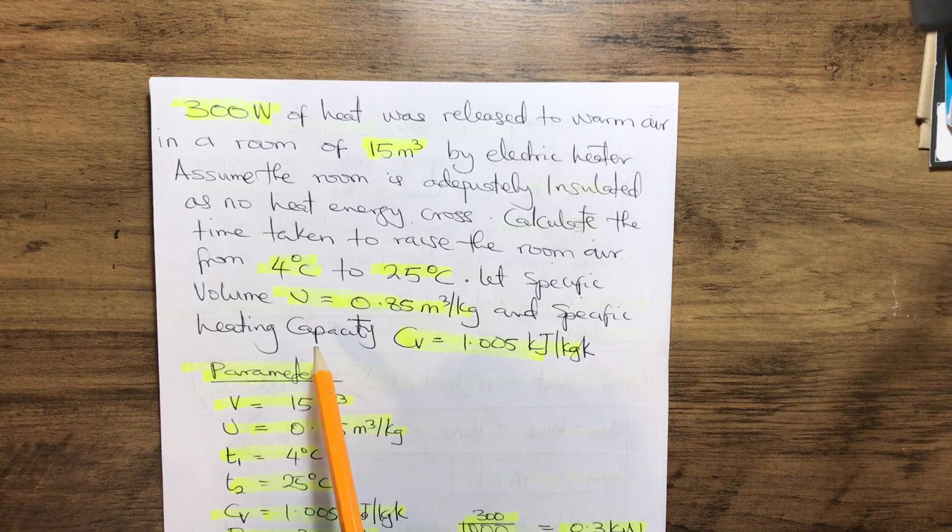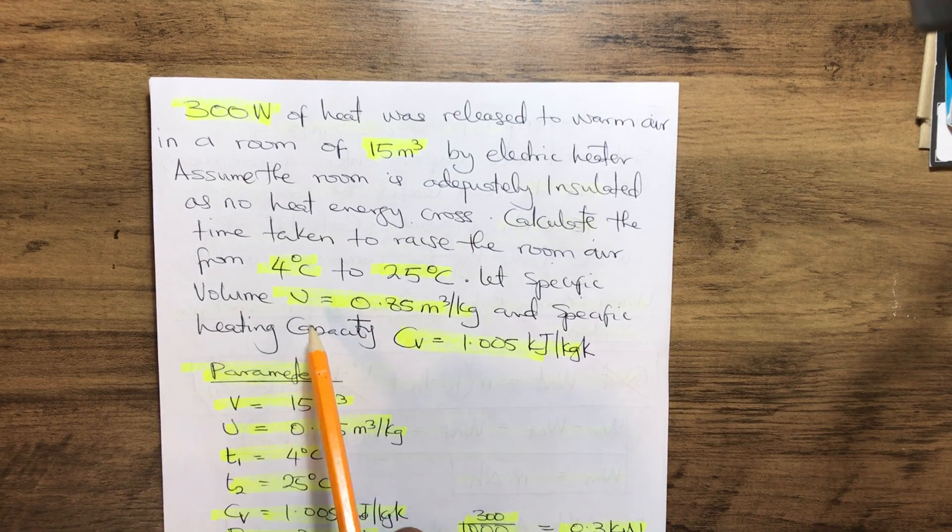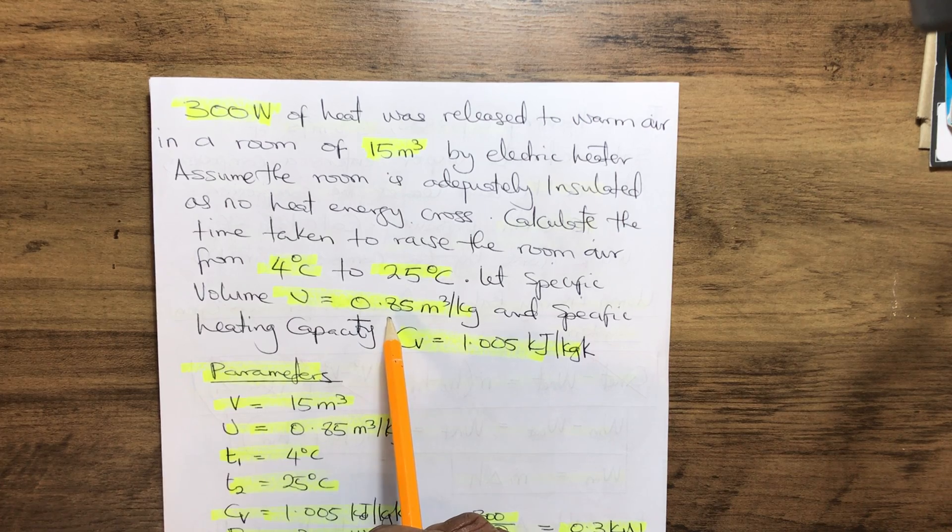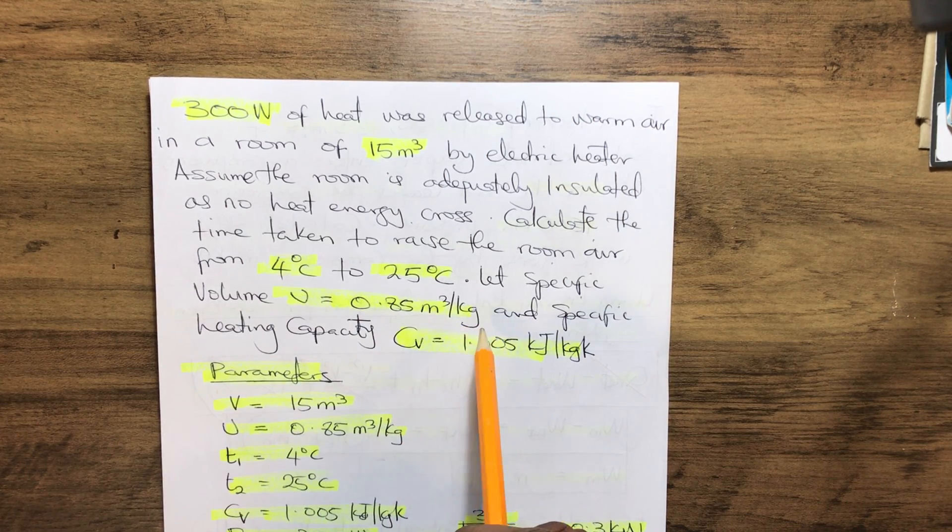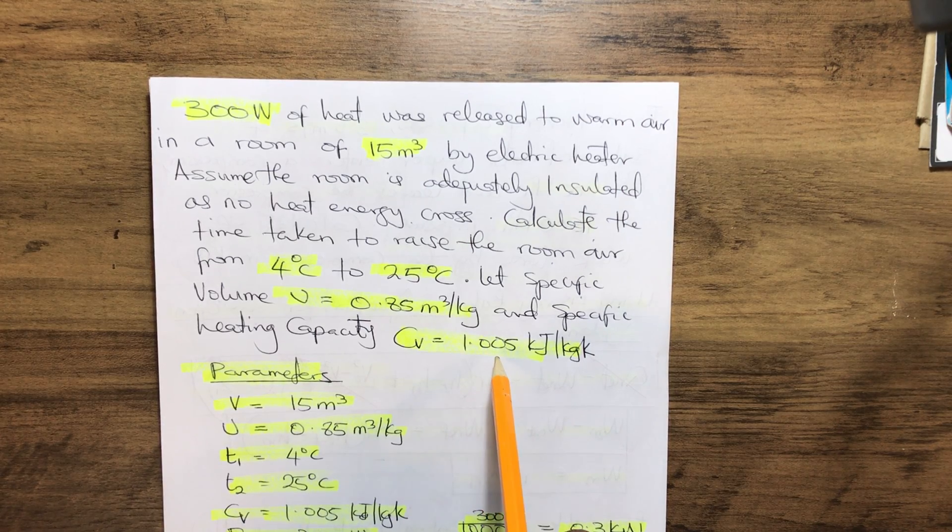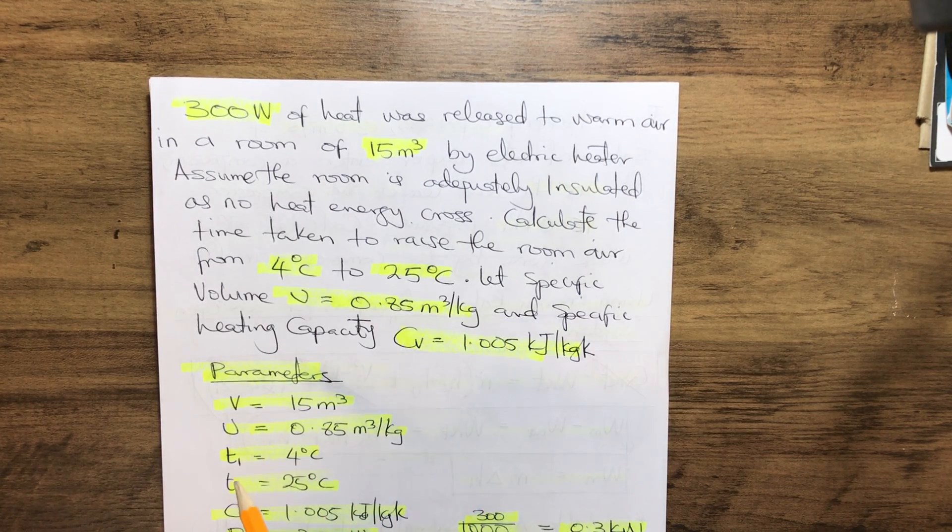Let the specific volume ε = 0.85 meter cube per kilogram, and the specific heat Cv = 1.005 kilojoules per kilogram kelvin.